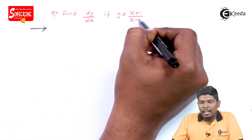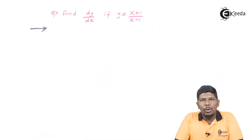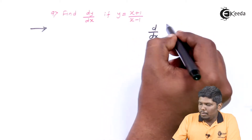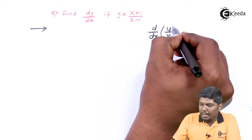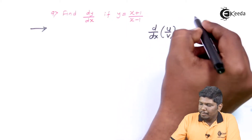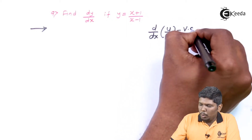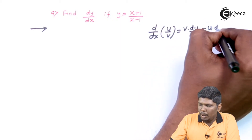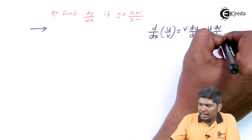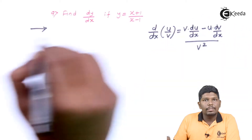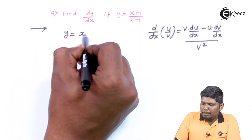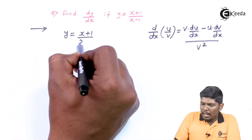Whenever we have two functions which are divided, we will use the u upon v rule. The u/v rule states that d/dx of (u/v) is equal to v·(du/dx) minus u·(dv/dx), all upon v squared.